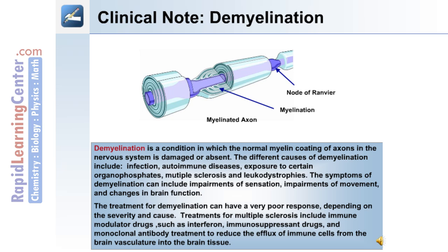The symptoms of demyelination can include impairments of sensation, impairments of movement, and changes in brain function. Treatment can have a very poor response depending on severity and cause. Treatments for multiple sclerosis include immune modulator drugs such as interferon, immunosuppressant drugs, and monoclonal antibody treatment to reduce the efflux of immune cells from the brain vasculature into the brain tissue.